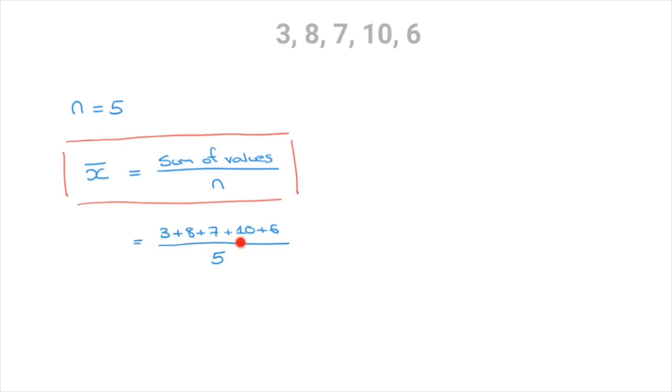Now adding all the numbers on the numerator here, you can go ahead and check, but we find that that's equal to 34 over 5. Finally, dividing 34 by 5, we find that the mean, that's x bar, is equal to 6.8. And that's the final answer.